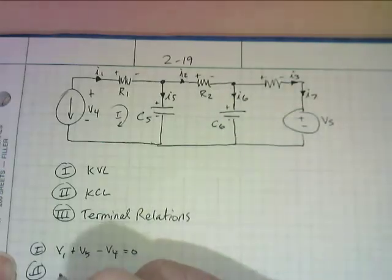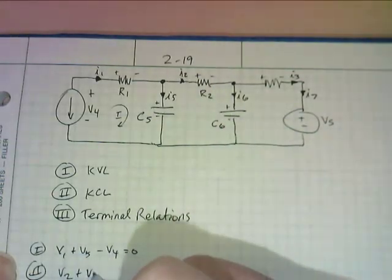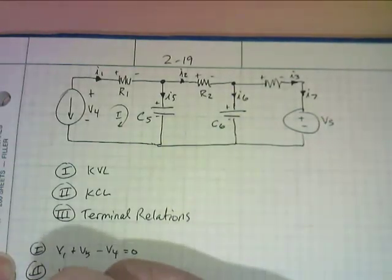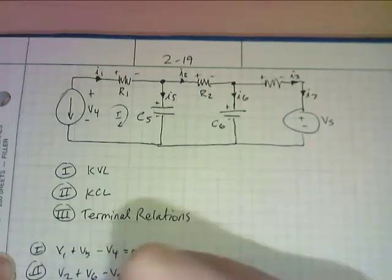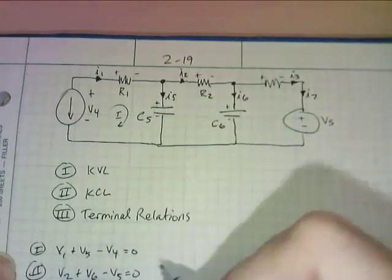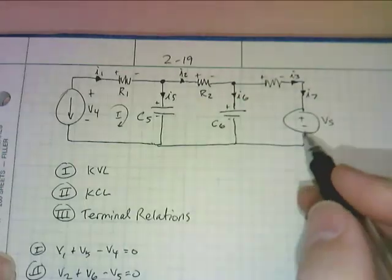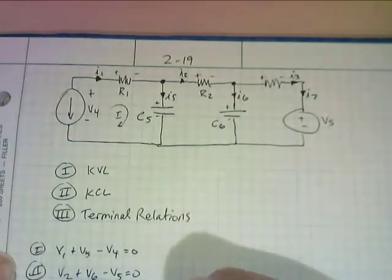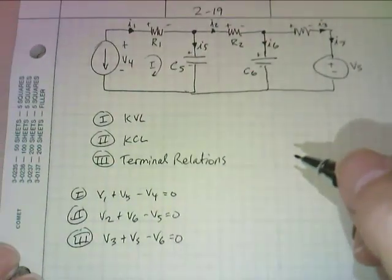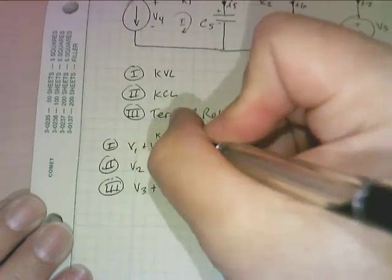Mesh number two: start off right here — we're going to have a positive V2, positive V6, and we're going to come up here to minus V5 equals zero. Mesh number three: start off right here — we're going to have a positive V3, and we're going to have a positive Vs (that's our source), and a negative V6 equals zero. So those are our three Kirchhoff's voltage laws from our three meshes.